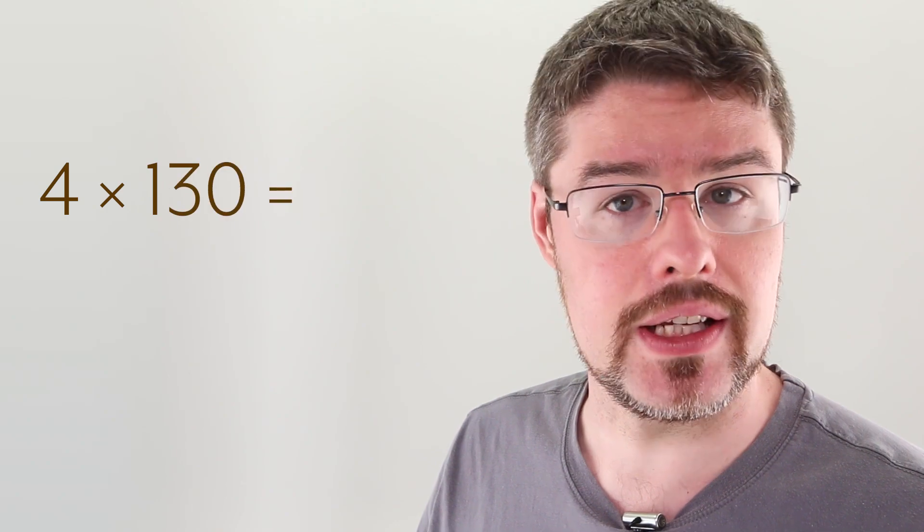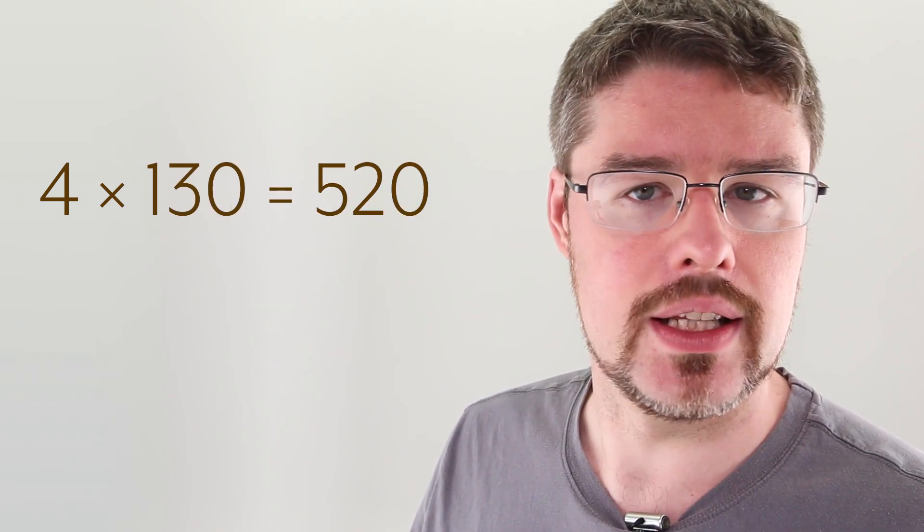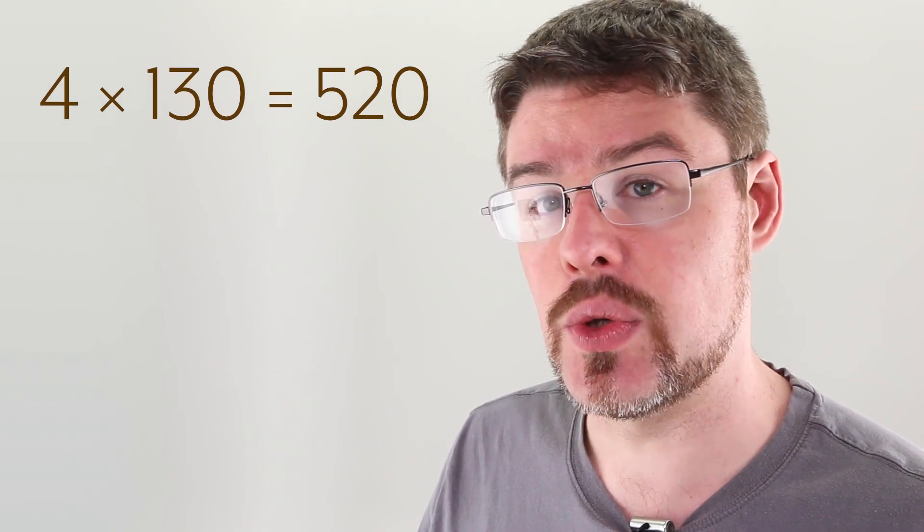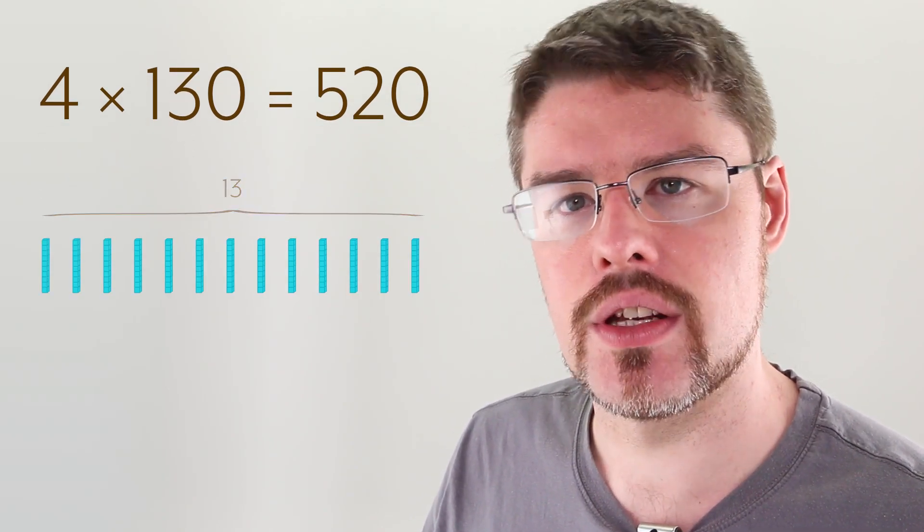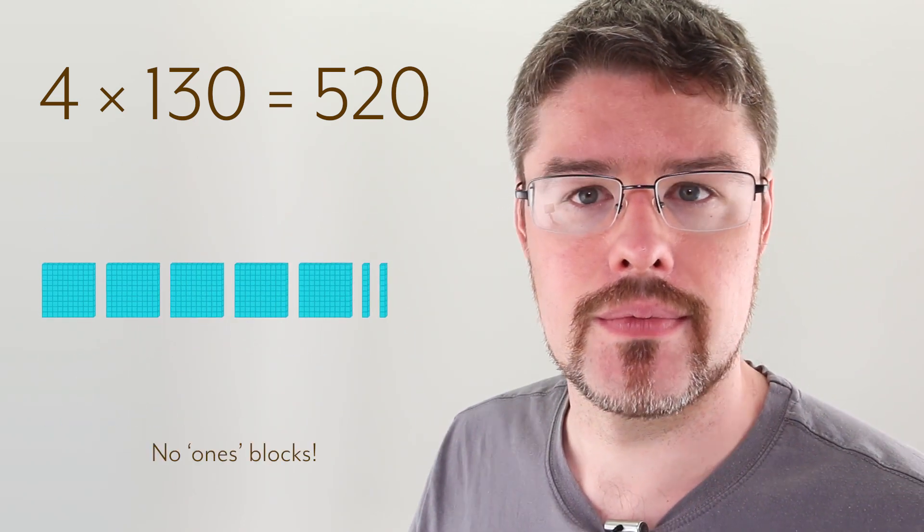This also works if you consider something like 4 times 130. 4 times 13 is 52, and then we add the zero onto the end like this. And again, this is because when you have 130, that's 13 10s. You're never going to have anything in your ones place, no matter how many of those you add together. Happily, this works for any number of zeros, in either number. So you can have a bunch of zeros on one side and a bunch of zeros on the other side. Simplify your numbers by getting rid of the trailing zeros, multiplying, and then tacking those trailing zeros onto the very end of your answer.